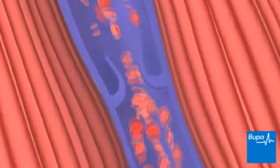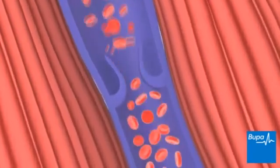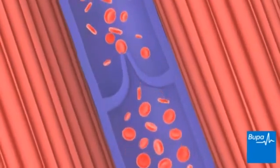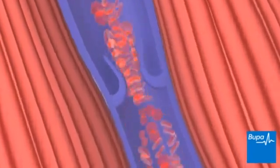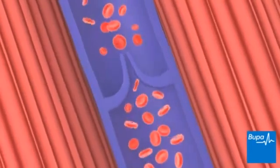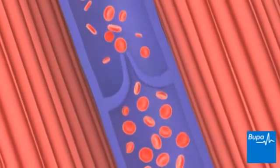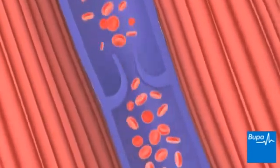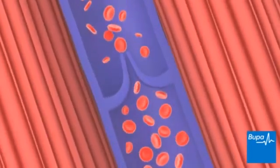Veins also have valves that prevent the blood from flowing back towards your feet. Here we show a valve and the muscles around the vein.